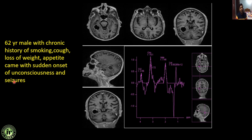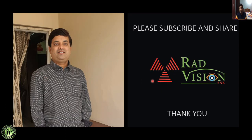Next: a 66-year male with chronic history of smoking, cough, loss of weight and appetite, presenting with sudden onset of unconsciousness and seizures. Multiple cystic foci scattered in bilateral cerebral parenchyma showing peripheral rim enhancement and significant choline peak with lactate peak or inversion of lactate in the necrotic areas and choline peaks in the peripheral rim areas. Considering the history of chronic smoking and elderly age with multiple cystic foci and raised choline, these are classical cystic metastases — primary likely lung carcinoma. I have covered various cystic lesions in the brain, both typical and atypical presentations. I thank Dr. Sanjeev Mani for giving me this opportunity to present on Indian Radiologist. Thank you all.